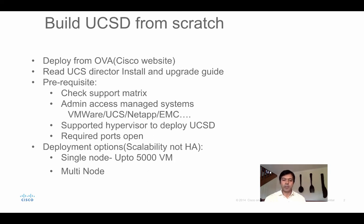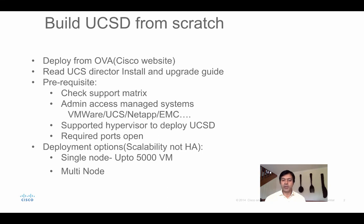After checking ports, there's a vital decision: single node or multi-node deployment. It depends on the deployment scale. Cisco's guideline is up to 5,000 VMs you should consider single node. If you can stay on single node, I recommend it. Single node means one VM that has all the different components of UCS Director in one box — it's easier to manage and less complex. If you go above 5,000 and have a scalability issue, by all means go multi-node.